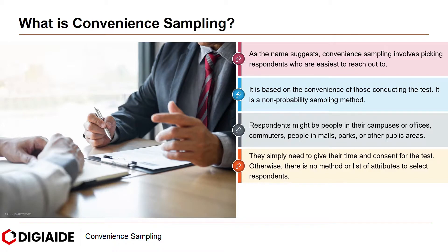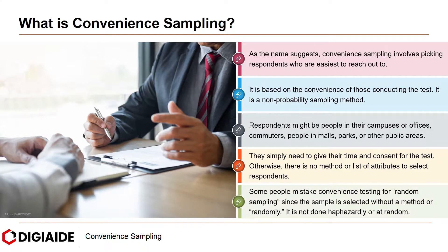They simply need to give their time and consent for the test. Otherwise, there is no method or list of attributes to select respondents. Some people mistake convenience testing for random sampling since the sample is selected without a method or randomly. However, it is not done haphazardly or at random.